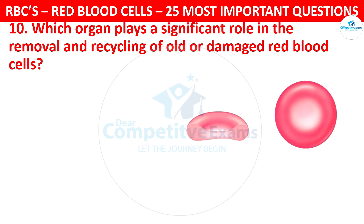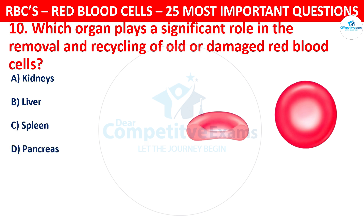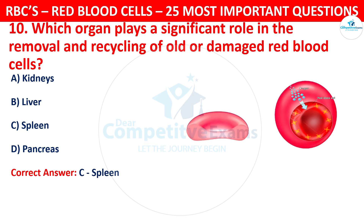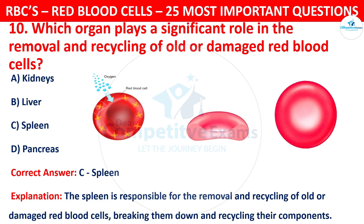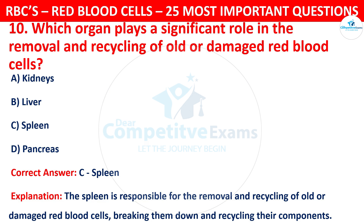Question 10. Which organ plays a significant role in the removal and recycling of old or damaged red blood cells? Your options are: Kidneys, Liver, Spleen, or Pancreas. The correct answer is C, that is Spleen. The spleen is responsible for the removal and recycling of old or damaged red blood cells, breaking them down and recycling their components.